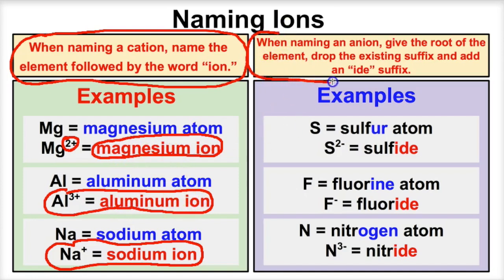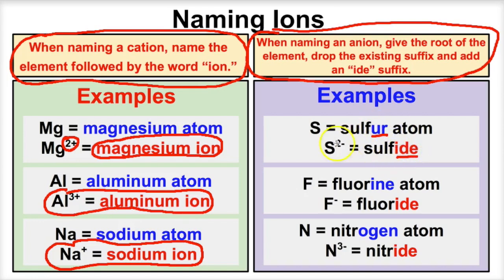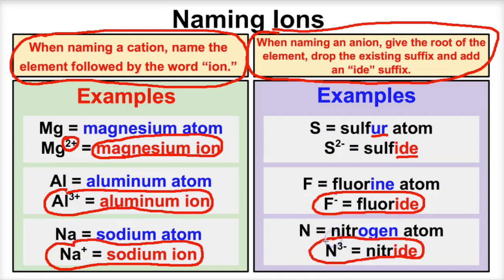When naming anions, it's a little different. Here's a sulfur atom — when it gains two electrons, its name changes to sulfide. We keep the root 'sulf,' drop the old suffix 'ur,' and add the suffix '-ide.' Sulfur becomes sulfide. Fluorine gains one electron and becomes fluoride. Nitrogen gains three electrons and becomes nitride. Oxygen becomes oxide, phosphorus becomes phosphide, chlorine becomes chloride — keep the root and add '-ide.'